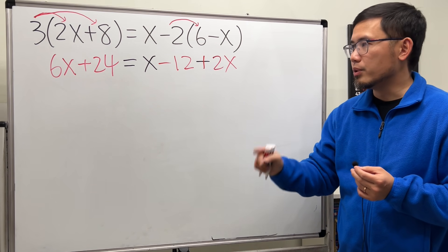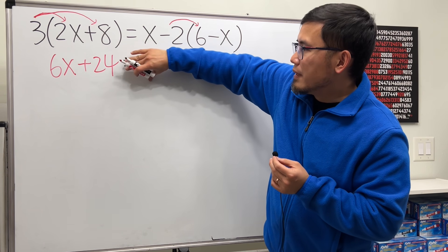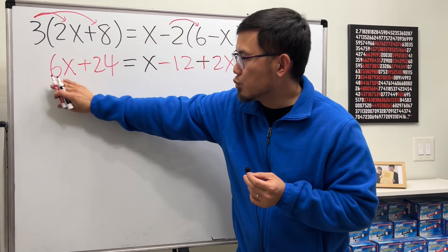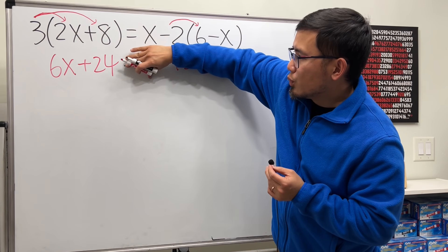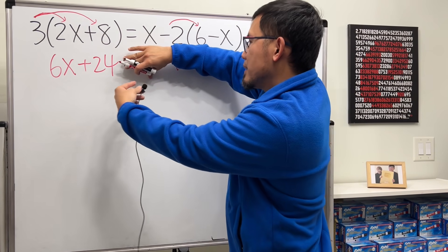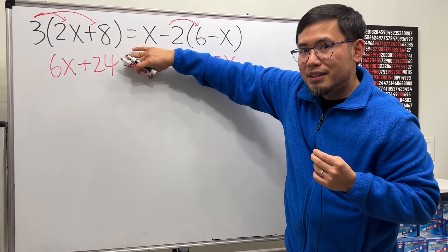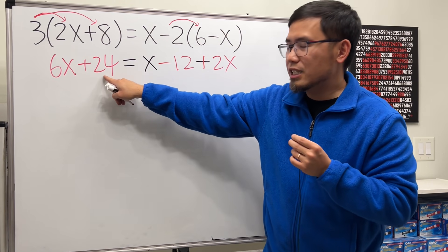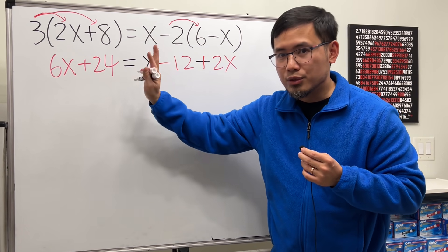Now step 2. Just look at one side at a time. So by one side, meaning look at the equal side. So this will be the left hand side. So just ignore that. We have 6x plus 24. Can we combine any terms? No, because this right here has the x, this right here does not have the x. So cannot be combined.